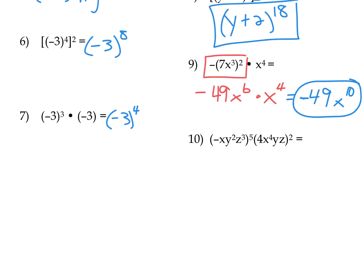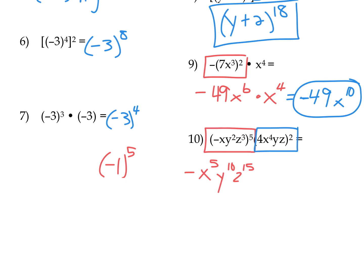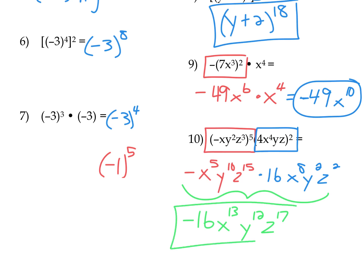Let's try another one. First, simplify each set of parentheses separately. The first parentheses: the negative is like negative one to the fifth power — a negative number to an odd power stays negative, giving negative x to the fifth, y to the 10th, z to the 15th. The second parentheses: 4 squared is 16, x to the eighth, y squared, z squared — since y and z are to the first power, 1 times 2 gives the second power. Now multiplying everything together: negative one times 16 is negative 16; x to the fifth times x to the eighth gives x to the 13th; y to the 12th; z to the 17th. That's our final answer.